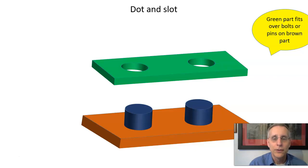And when the green part goes over the brown part and the bolts go through the holes, we want to be able to constrain all six degrees of freedom of the green part where those two holes and not have interferences.